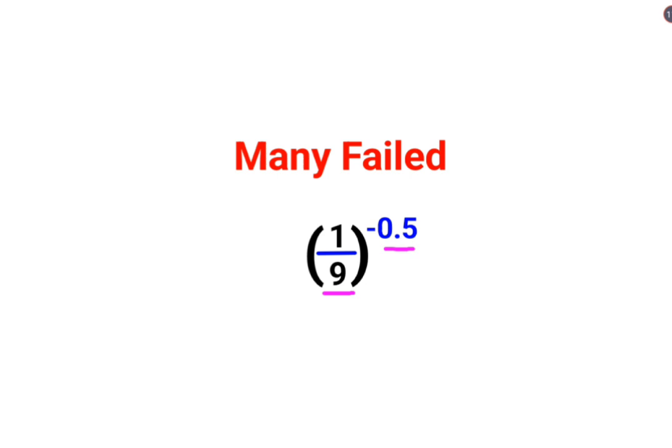The first very important thing you need to remember is that a raised to minus n can be written as nothing but the reciprocal of 1 upon a raised to positive n. So whenever you have a negative index, you just put the reciprocal of your base. Your reciprocal of 1 upon 9 is nothing but just 9. So now your question changes to 9 raised to 0.5.